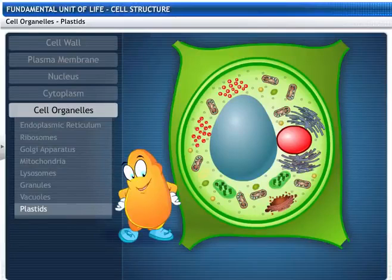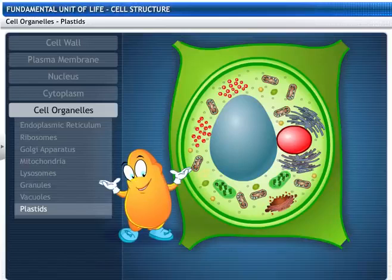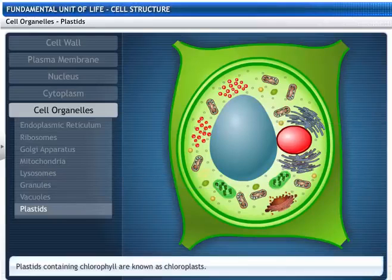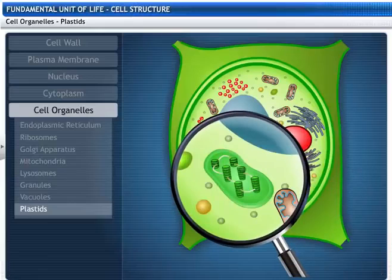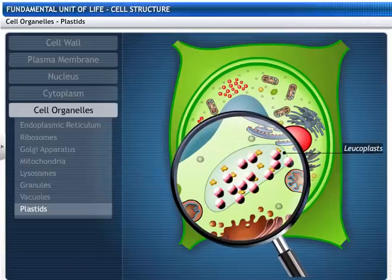You've seen this cell before — yes, it's a plant cell. I'll show you an organelle present only in plant cells: the plastids. There are two types: coloured plastids called chromoplasts and colourless plastids called leukoplasts. Plastids containing chlorophyll are known as chloroplasts, which are important for photosynthesis. Chloroplasts have membranous layers called grana in a ground substance called stroma. Leukoplasts store starch, oils, and protein granules.